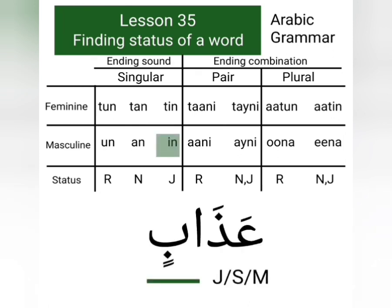Before doing our first example, one more thing we have to keep in mind: for every word, first of all we look for the ending combination and then we look for the ending sound. Similarly, we look for the feminine combinations and sounds first, and then we look for the masculine combinations and sounds.